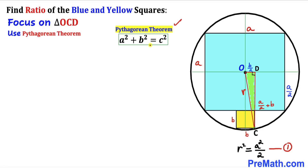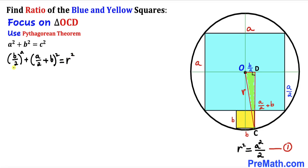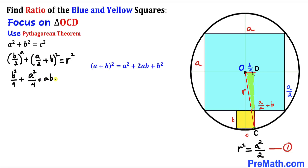Applying the Pythagorean theorem to triangle OCD: (b/2)² + (a/2 + b)² = r². Simplifying, this gives b²/4 plus, expanding the binomial using the identity (a+b)² = a² + 2ab + b², we get a²/4 + ab + b² = r².